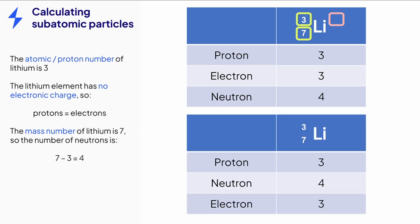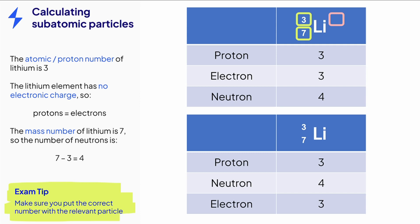Be careful. Sometimes an exam might give you a specific order of subatomic particles for you to answer with. This example contains the same information, but the order of the subatomic particles has changed. Make sure that you check which subatomic particle you are writing the answer for, because it can be an easy but frustrating mark to lose.